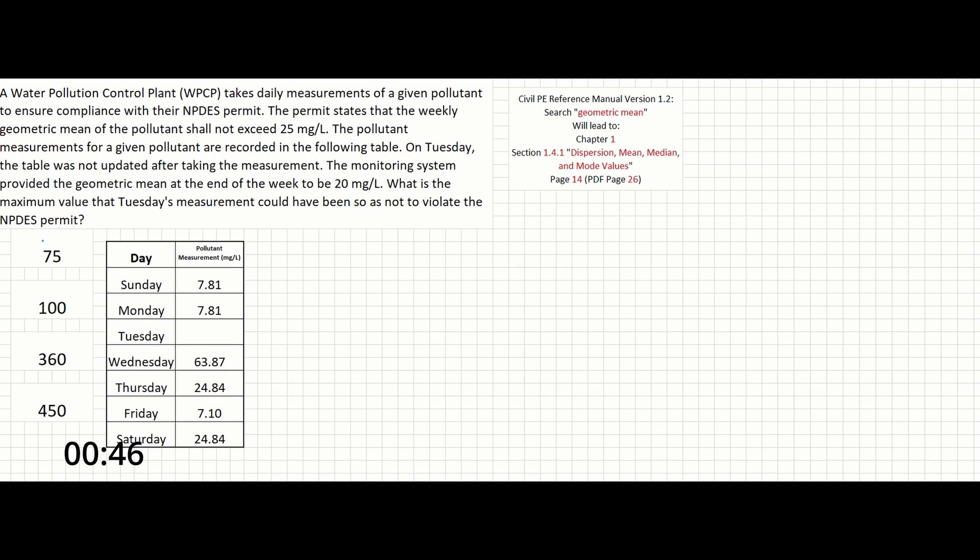This is a simple math problem disguised as an environmental engineering or water resources problem. In the reference manual, we can search for geometric mean to find the equation we need in chapter one. The geometric mean equation is written as follows.